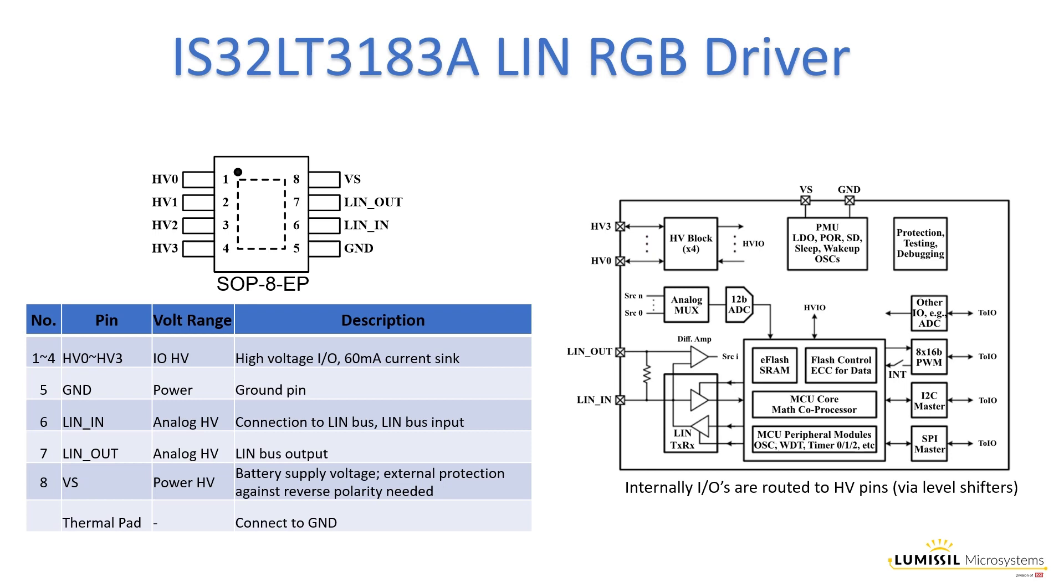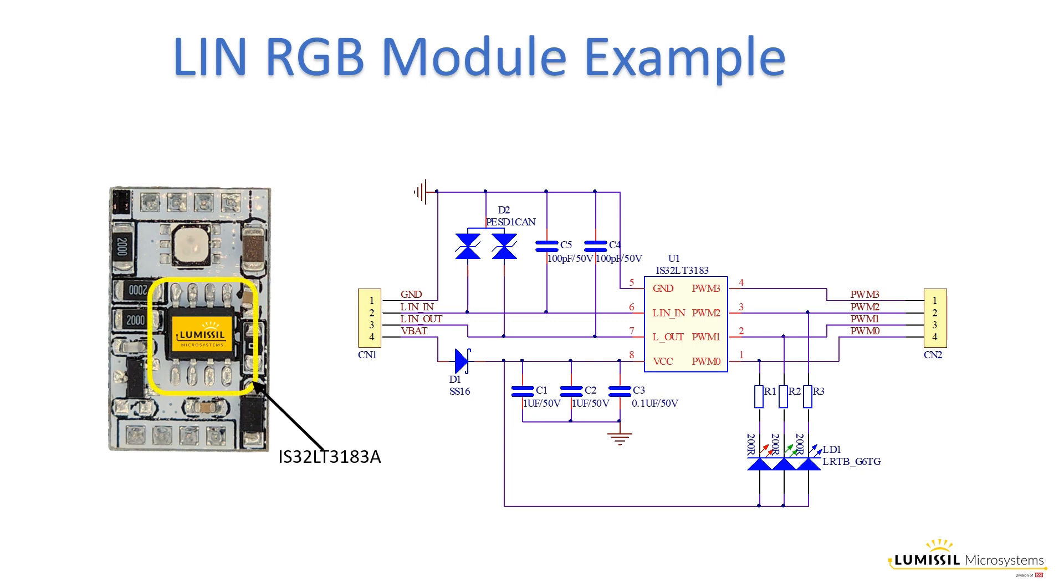This is an example of a LIN RGB module. The main components are the 8-pin IS32LT3183A LIN driver and packaged RGB LEDs. Other discrete components are protection diodes, noise filter capacitors, and voltage drop resistors.